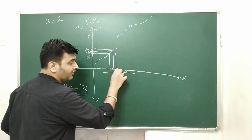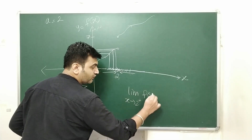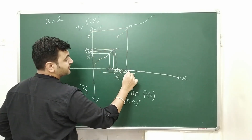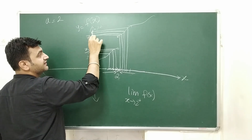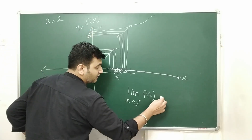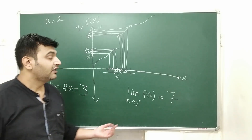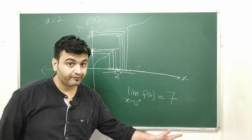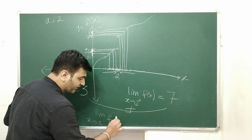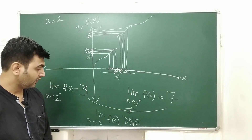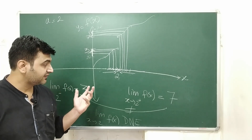Now for the right hand limit, you approach 2 from the right hand side: limit as X approaches 2 plus. As you can see from the graph, as you come closer and closer to 2, the images are approaching towards 7. Therefore the right hand limit of the function at point 2 is 7. Left hand limit exists (equals 3), right hand limit exists (equals 7), but they are not equal — therefore the limit as X approaches 2 does not exist.